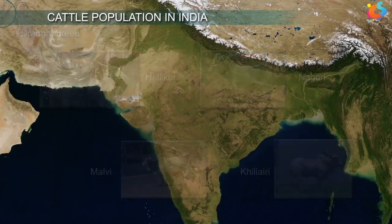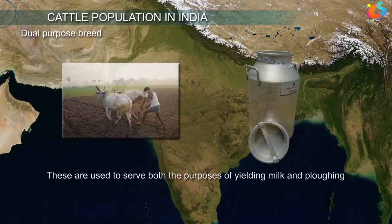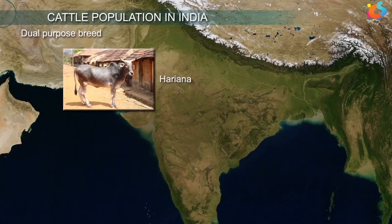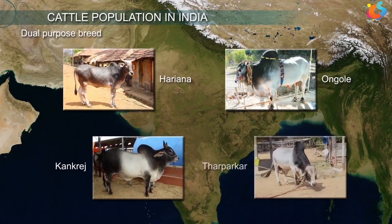Dual purpose breeds are used to serve both the purpose of yielding milk and plowing. Examples include Haryani, Ongole, Kangrej, Tharparkar, etc.